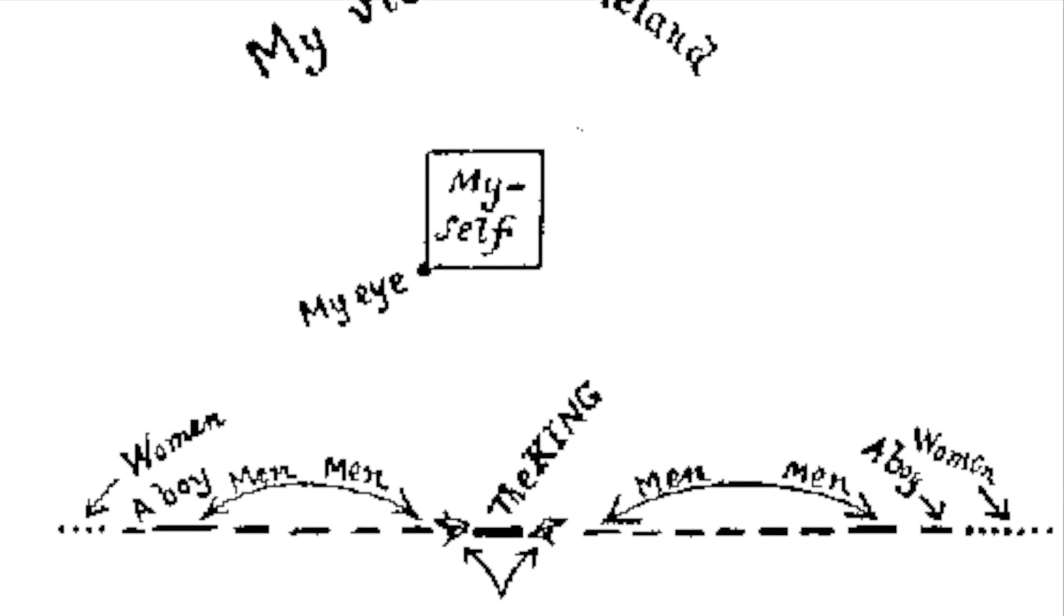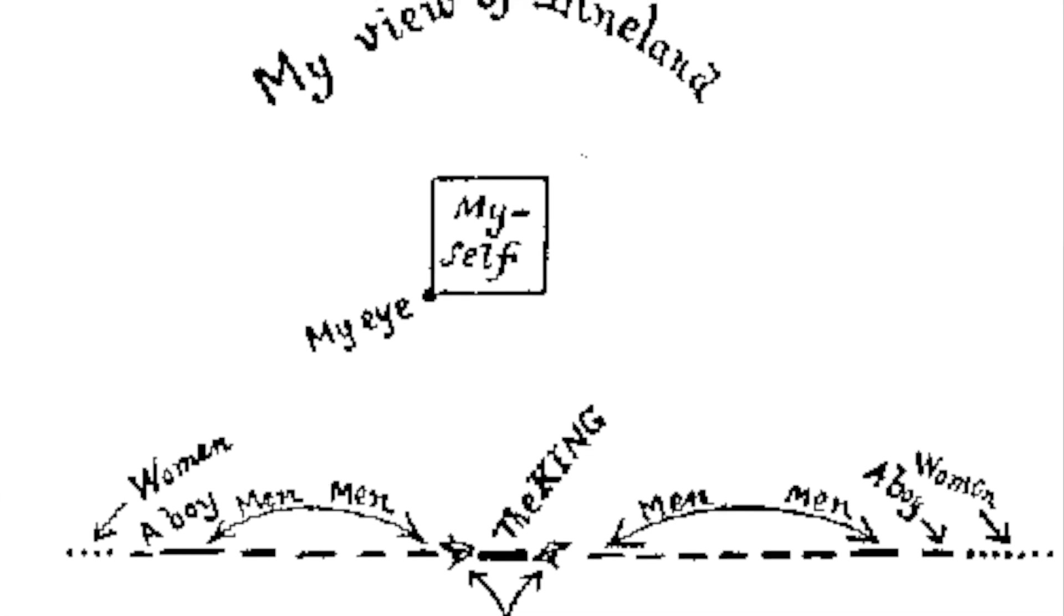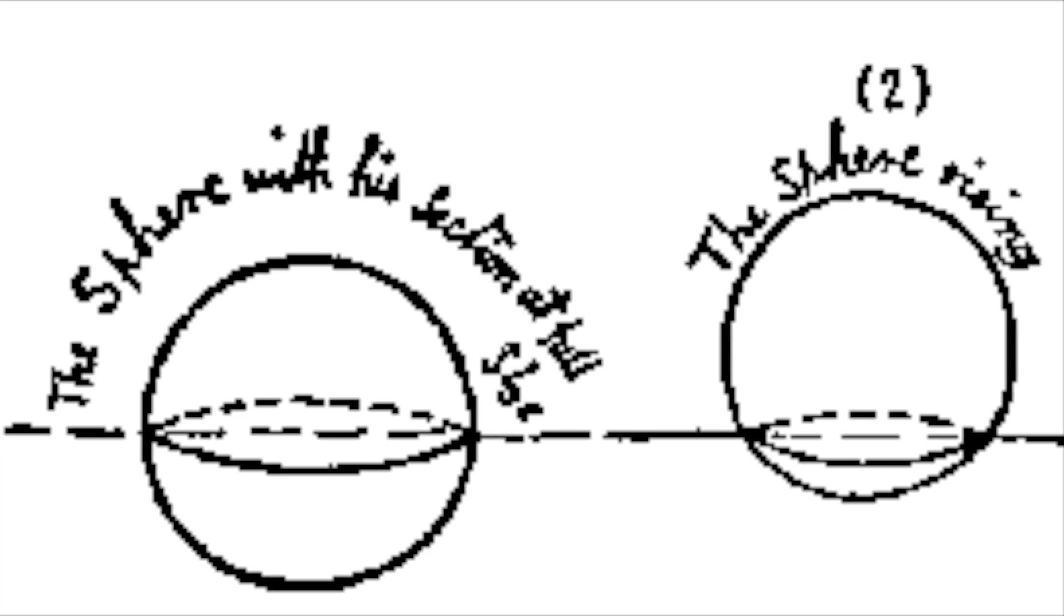If we imagine a piece of paper that is very, very thin, this means the thickness is less and less, and then the front and the back would be closer and closer together. If it were infinitely thin, like in Flatland, the front and back would be the same. There wouldn't be a front and back. There would only be a front.